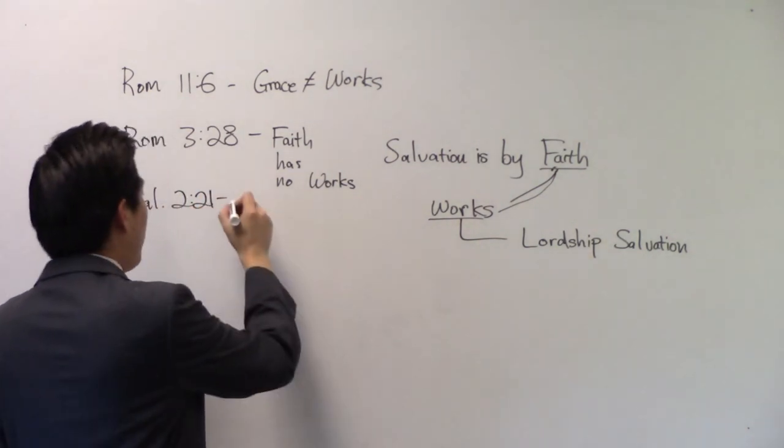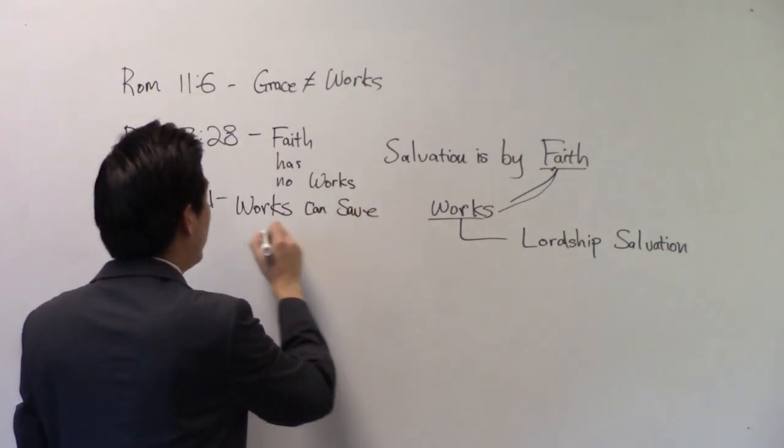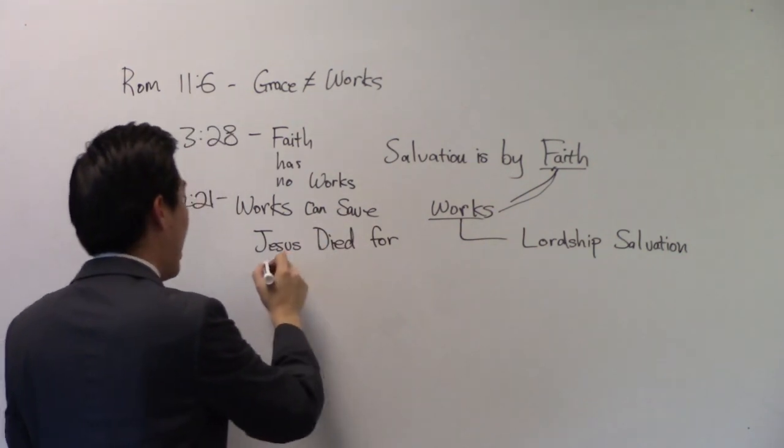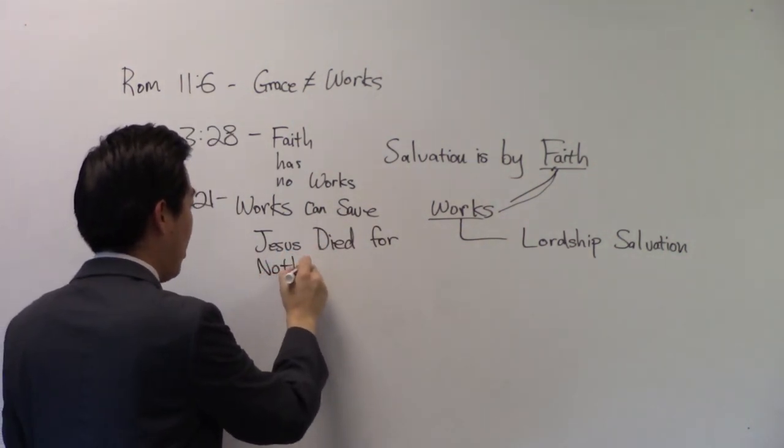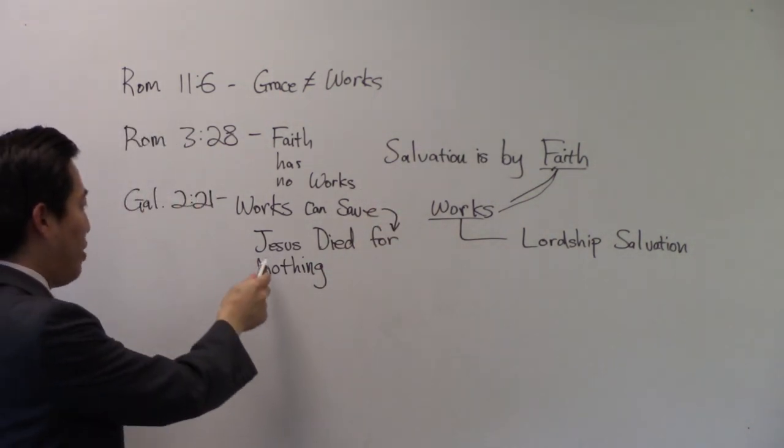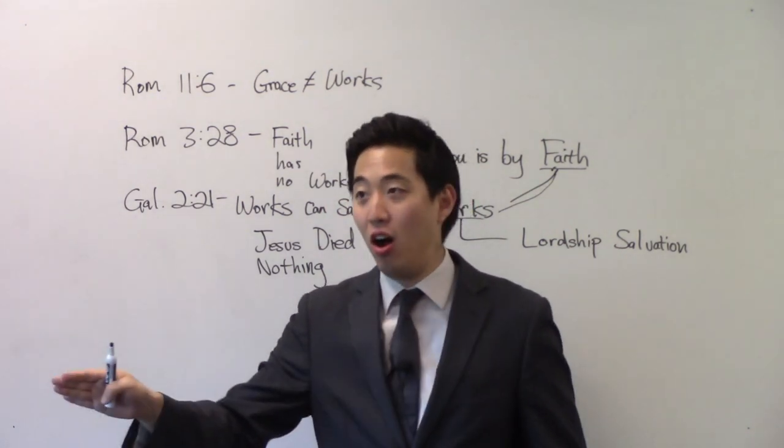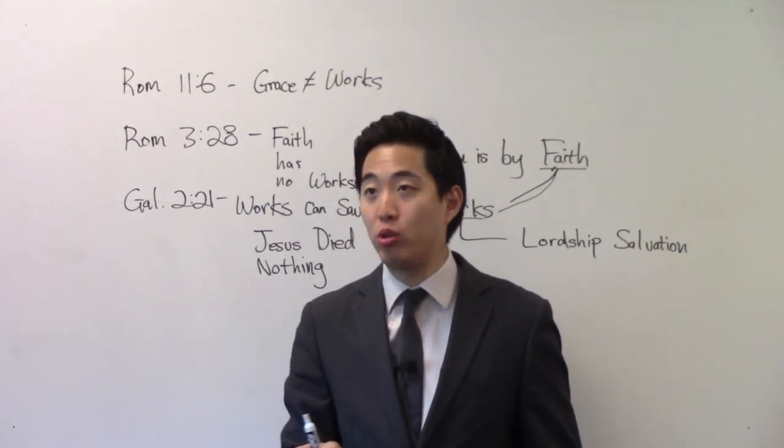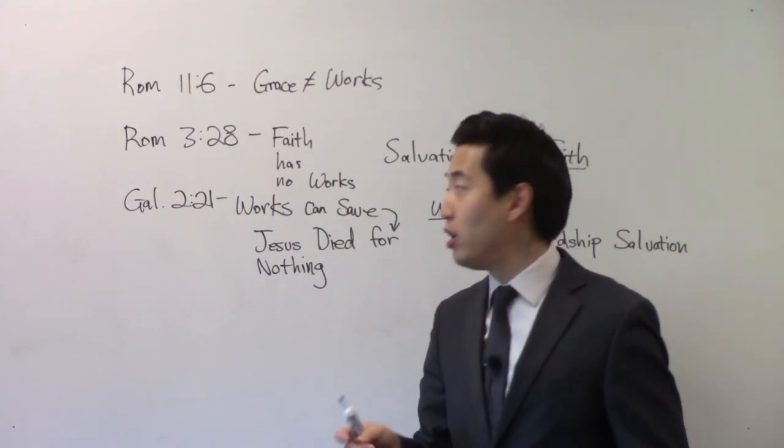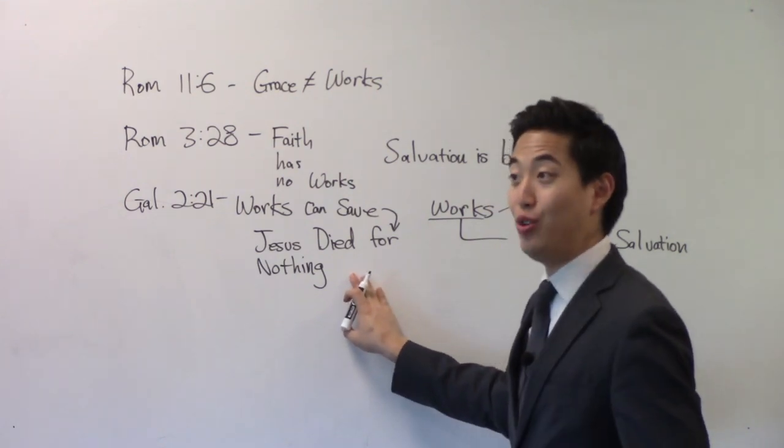So Galatians chapter 2, verse 21. Simple. If you think good works can save you, then why did Jesus die for you? Then Jesus died for nothing. So if works can save, you've got to realize this. Jesus wasted his time. So we don't believe in that. We don't believe works can save. Because what? Jesus' death did it all. Don't we sing the song, Jesus paid it all? What does that mean? He paid it all. So if you believe your work counts, then you're saying that Jesus' sacrifice is incomplete. He died for nothing. And it wasn't enough.